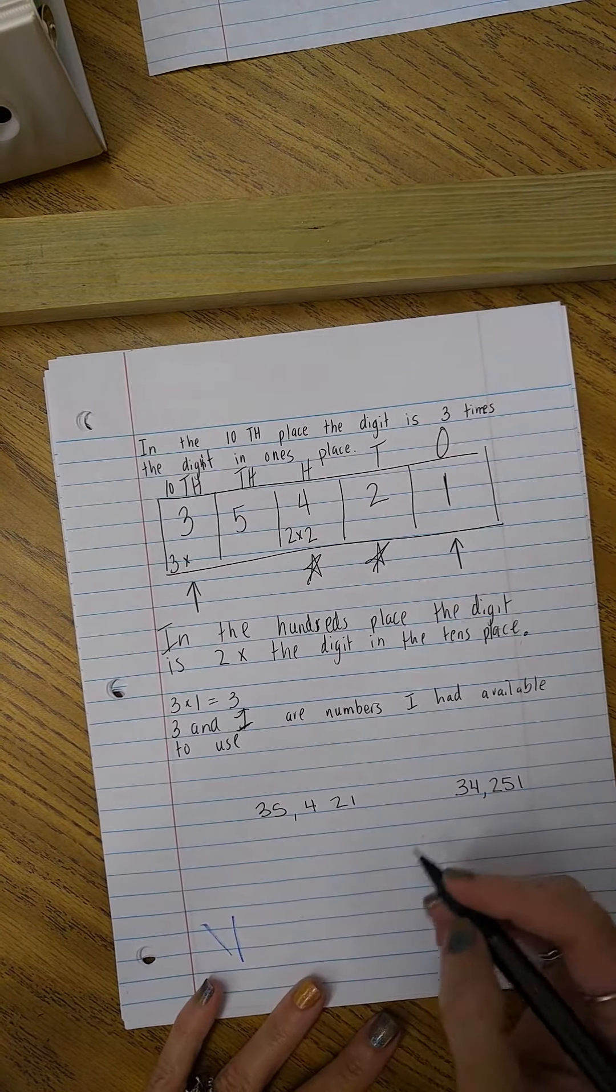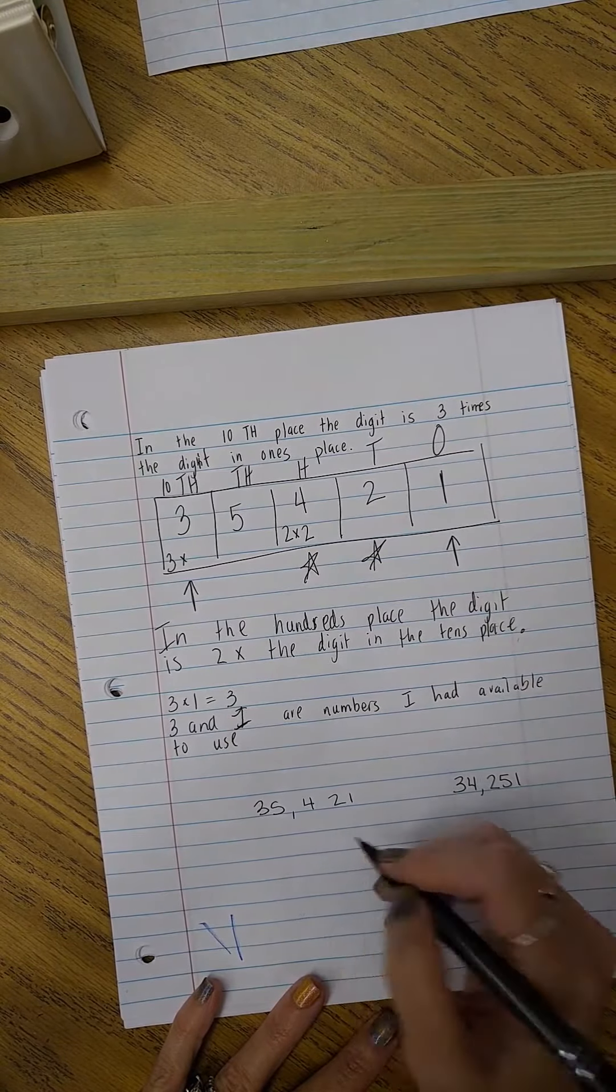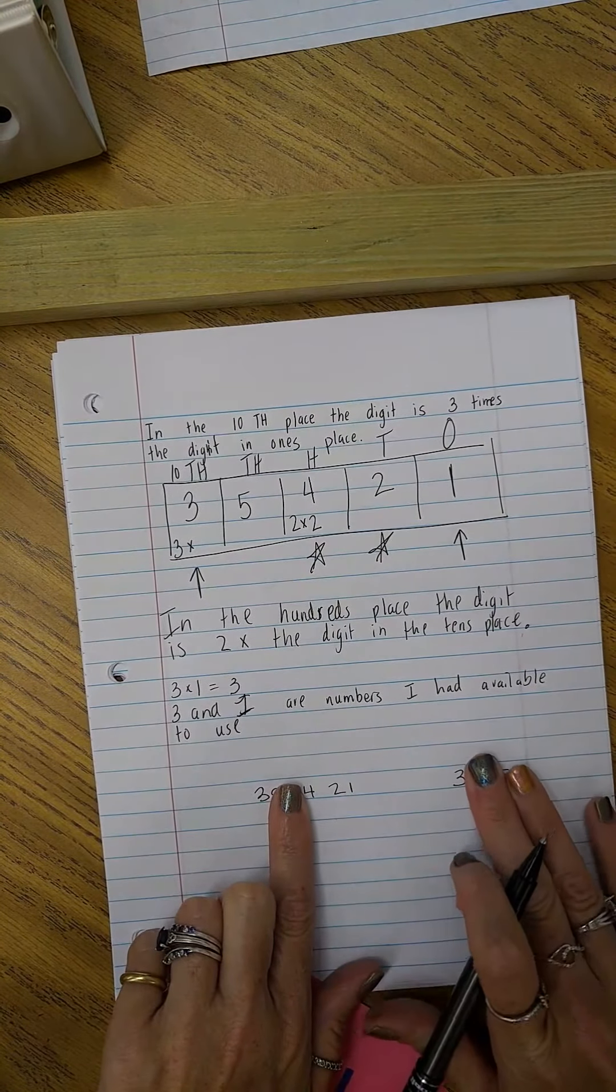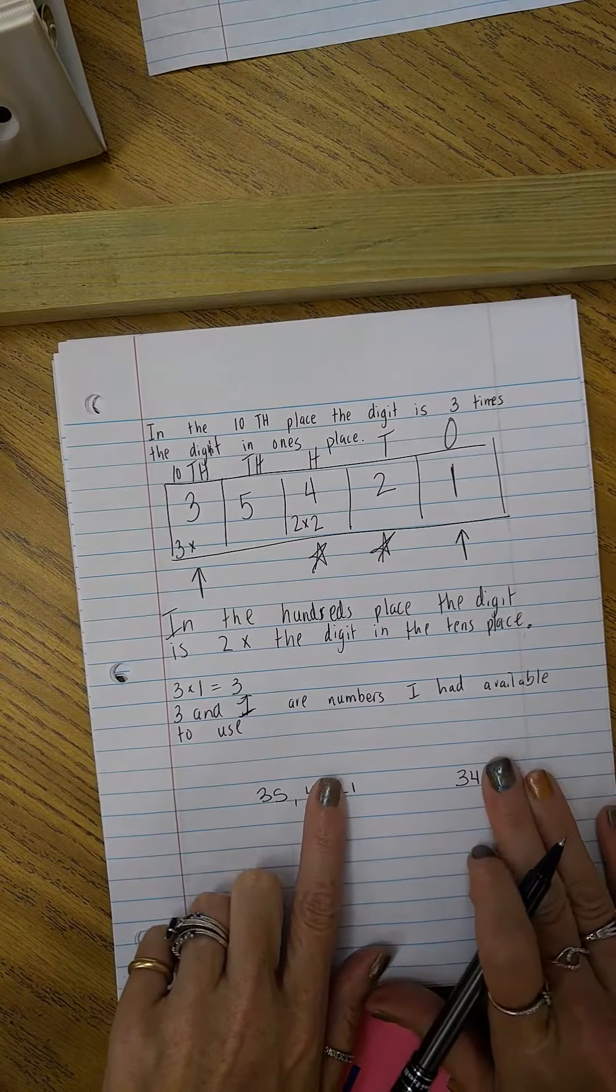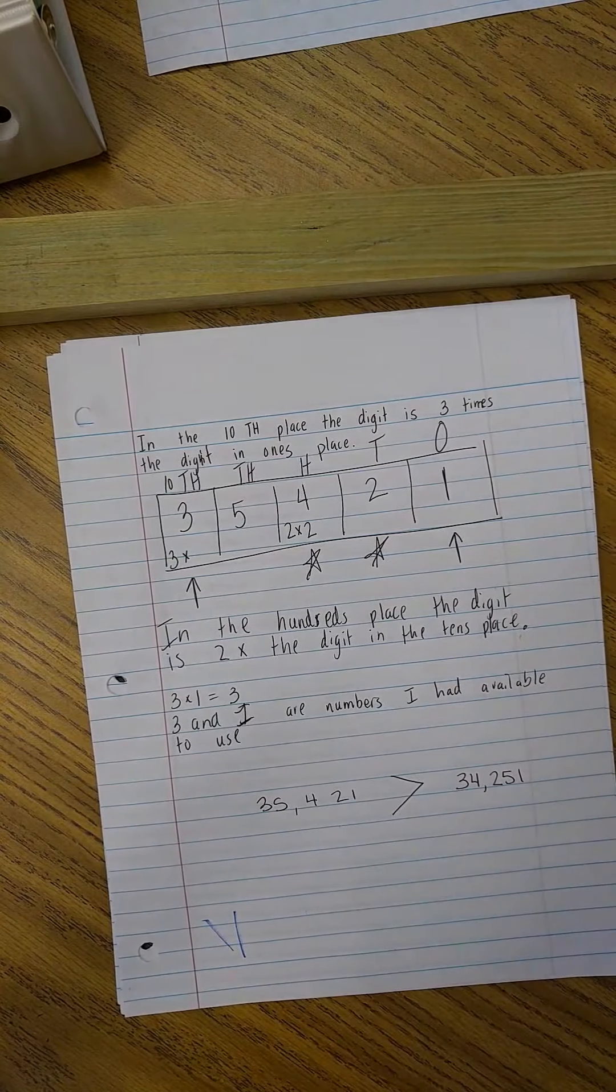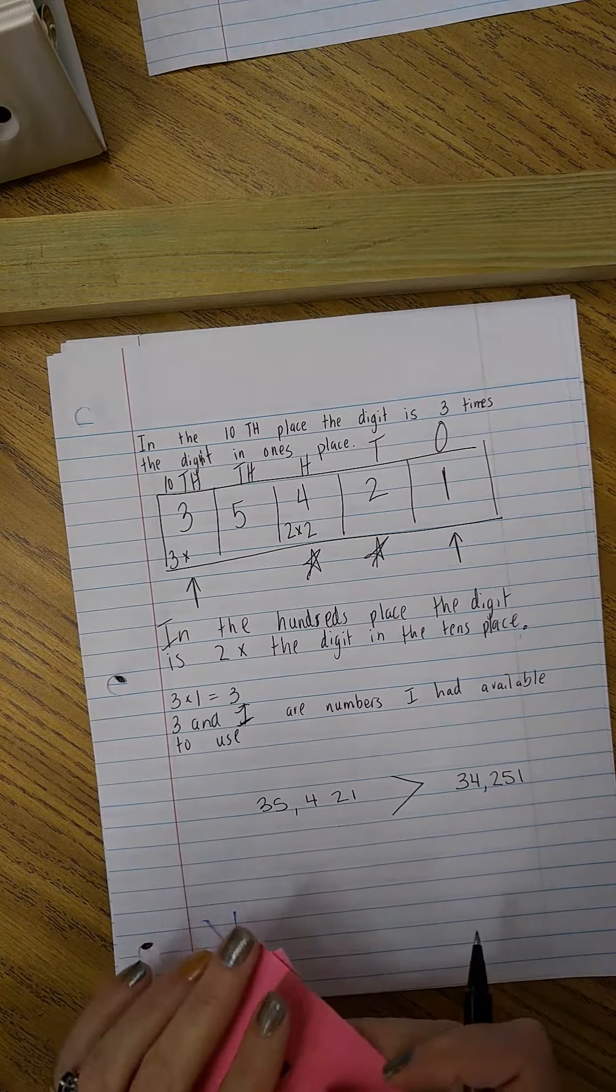And I would compare these numbers and I would do that just like I did my homework, any strategy that I want. But I know if I look at that, my ten thousands are the same. My thousands, well this one's bigger, so it'd be greater than. So that is what the assignment would look like.